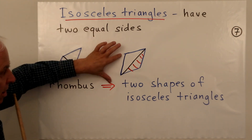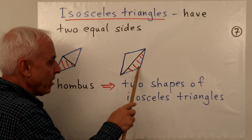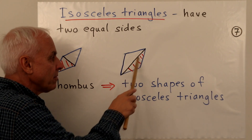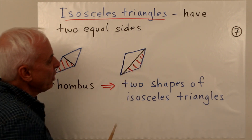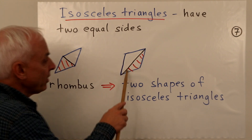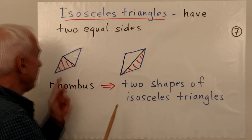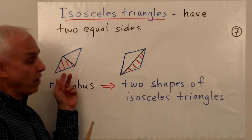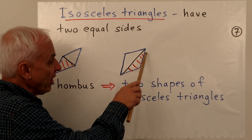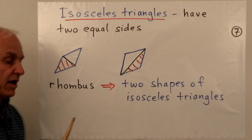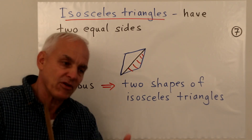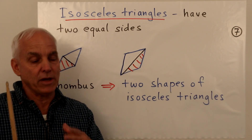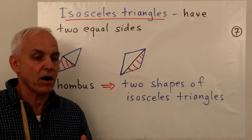We could take the same rhombus and instead draw the other diagonal — a line between the other two corners — splitting the rhombus into two triangles of a quite different shape. This is still an isosceles triangle but quite different from the first one, since it still has two equal sides taken from the four equal sides of the rhombus. So those are isosceles triangles — somewhat symmetrical, not quite as symmetrical as the equilateral triangle, but very common in practice and an important family of triangles.